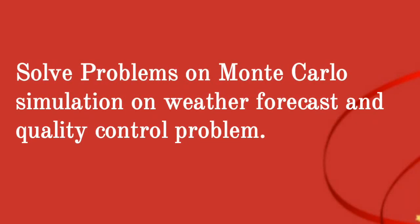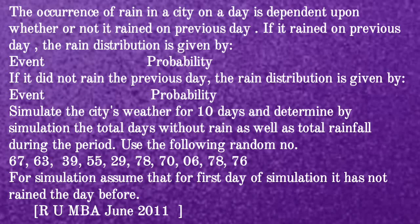Solve problems on Monte Carlo Simulation on Weather Forecast and Quality Control. The occurrence of rain in a city on a day is dependent upon whether or not it rained on the previous day. If it rained on the previous day, the rain distribution is given in a table of event probabilities. If it did not rain the previous day, the rain distribution is given in another table. Simulate the city's weather for 10 days and determine the total days without rain as well as total rainfall during the period.